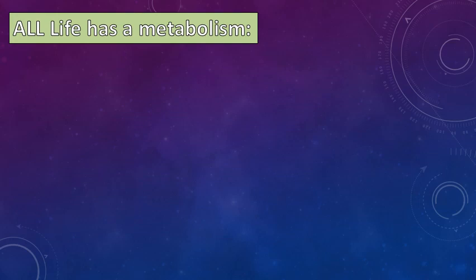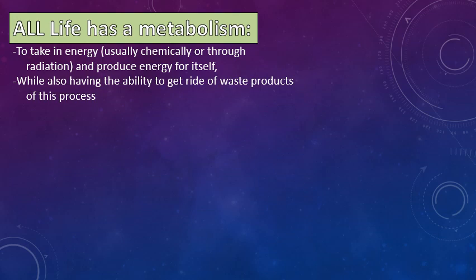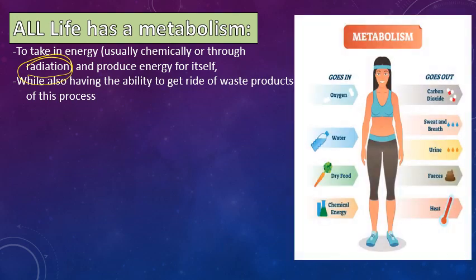All life has metabolism — the ability to take in energy, modify that energy into a form useful for itself, and get rid of waste products. Taking in energy can be in the form of chemicals, like food, which is basically chemical energy, or taking in radiation, like plants doing photosynthesis. Every organism, whether it's one cell or trillions of cells, has essential needs for getting energy. For humans, inputs include oxygen, water, and food; outputs include carbon dioxide, sweat, urine, fecal matter, and heat.